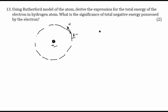The electrostatic force of attraction is equal to the centripetal force. This force of attraction is providing the centripetal acceleration for the electron to perform circular motion. So we can easily say that the electrostatic force of attraction is equal to the centripetal force.